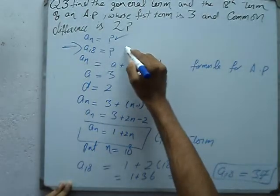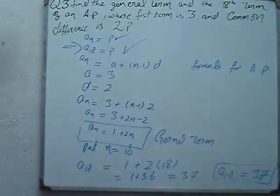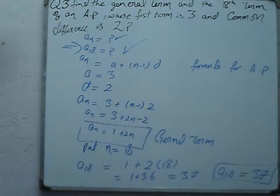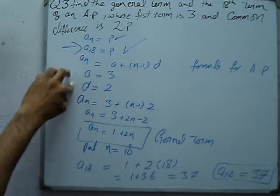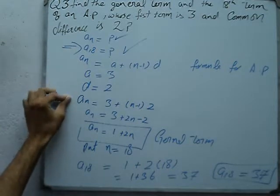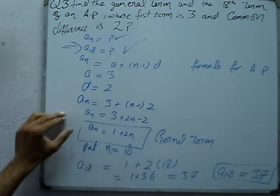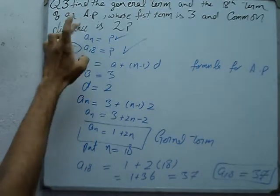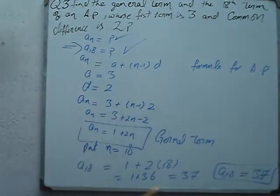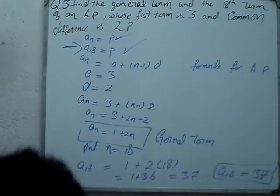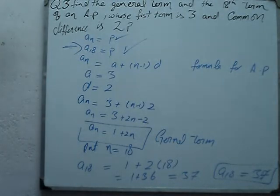We have found both answers. First we used the formula for arithmetic progression with the given data to find the general term, which is 2n plus 1, and then found the 18th term, which is 37. Our answer is complete.